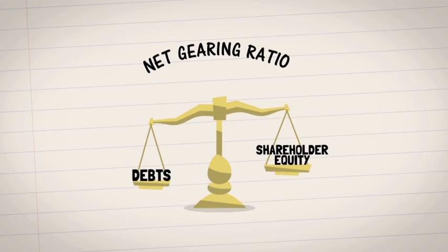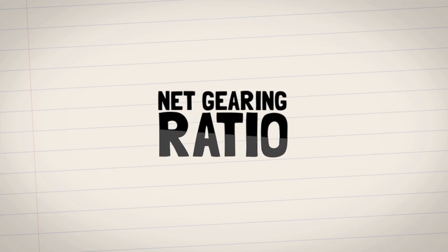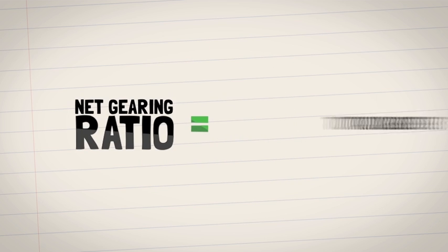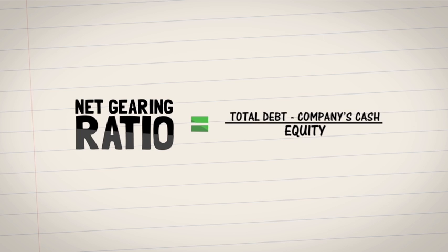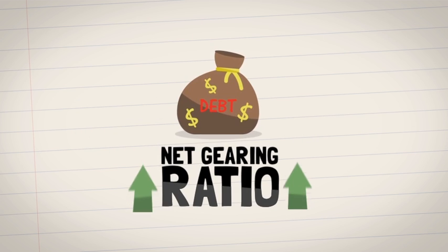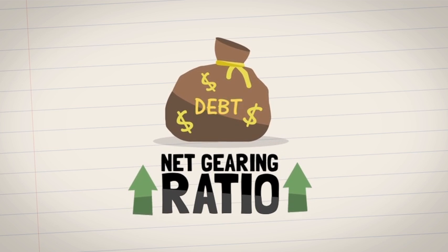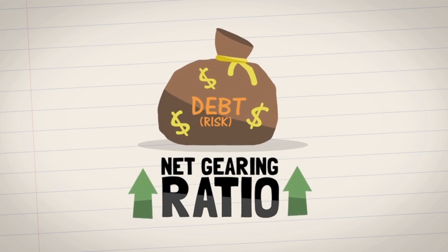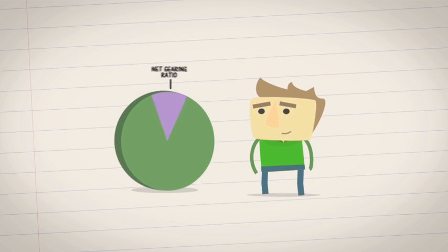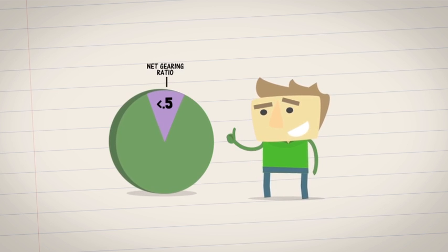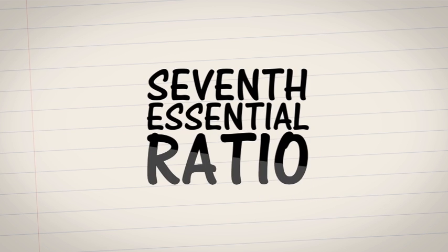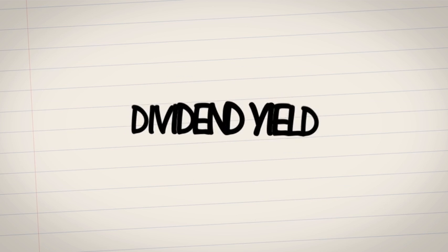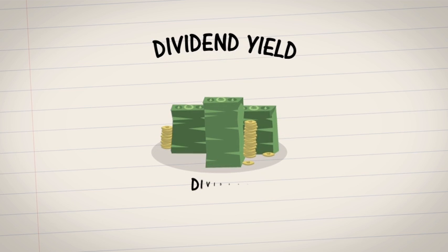The sixth essential ratio is the net gearing ratio. This measures a company's debts against its shareholder equity. To calculate this ratio, first take the total debt and subtract the company's cash, then divide that number by the equity. The higher the ratio, the more debt and therefore risk the company has. Look for a net gearing ratio of 0.5 or less.